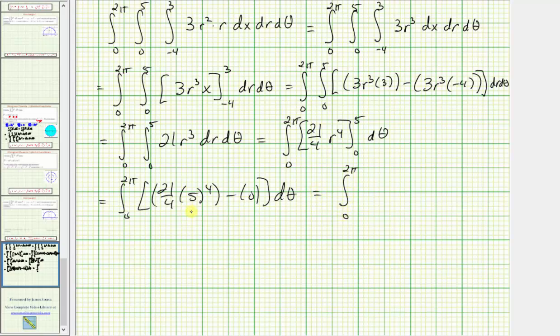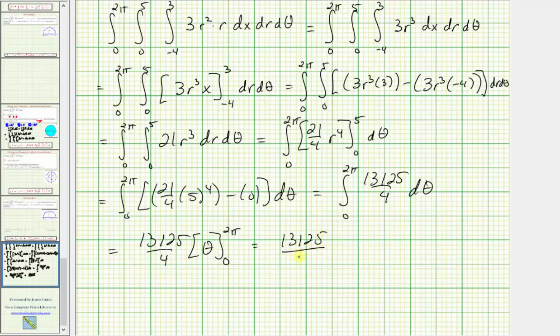This simplifies to 13,125/4 dθ. And now we integrate this with respect to θ. Performing substitution for θ, we're just going to have 13,125 divided by 4 times the quantity 2π - 0.